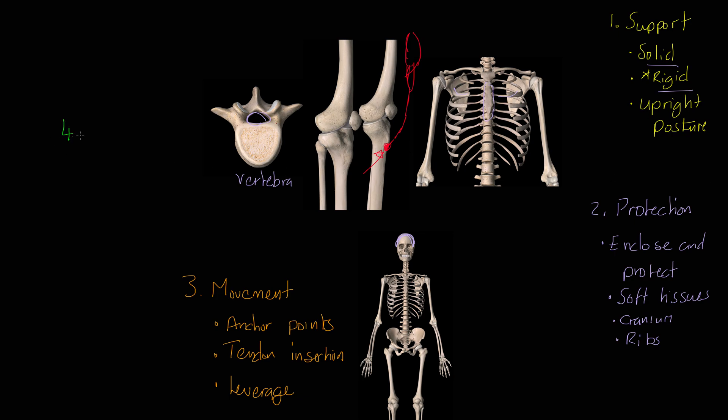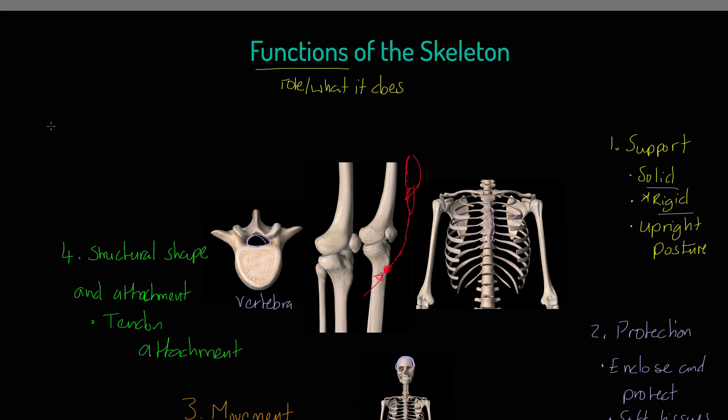Let's keep this going. What is our fourth function of the skeleton? I want to talk to you about structural shape and attachment. This relates very much to points we've made already. We have got this notion of tendon attachment from muscles onto the skeleton, allowing movement to occur. That's a really important point, we've almost stressed it twice.